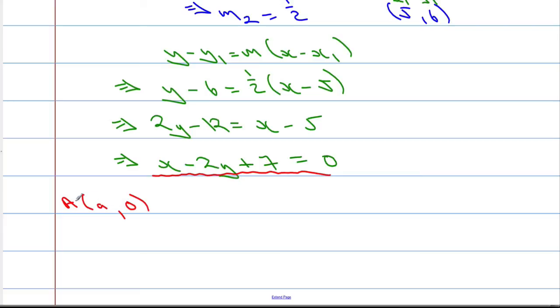So, A is the point (A, 0). Let's work out this x-coordinate. Let's leave it as x. Let's not overcomplicate things. Some value x with a 0. So, we get x minus 2 times 0 is 0, plus the 7 is going to equal 0. Implies that x will equal negative 7. So, A is the point (negative 7, 0).